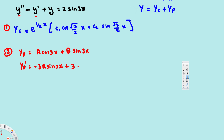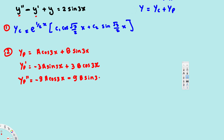For the second derivative, we differentiate yp' again using the chain rule. The derivative of −3A sin 3x gives −9A cos 3x (multiplying by 3 again), and the derivative of 3B cos 3x gives −9B sin 3x (since derivative of cos is −sin, times 3). So yp'' = −9A cos 3x − 9B sin 3x.